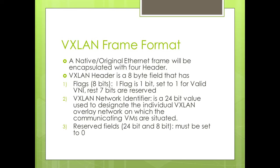The first header is the VXLAN header, which is an 8-byte field. It contains an 8-bit flags field where the I-flag bit, when set to 1, indicates that a valid VNI is present; the remaining 7 bits are reserved. The VXLAN Network Identifier (VNI) is a 24-bit value used to designate the individual VXLAN overlay network on which communicating VMs are situated. There are also reserved fields — one 24-bit and one 8-bit — which must be set to 0.